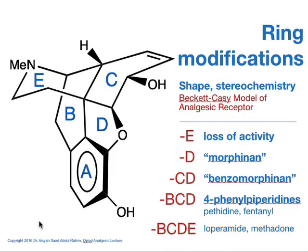The last part of the modification would be on the ring structures. As you know already, there are five rings in morphine: A, B, C, D, and E. For example, if you take out the E ring, it would result in a nucleus that gives a total loss of activity — in other words, that particular interaction is very important. If you take out ring D only, leaving A, B, C, and E, it would give a morphinan structure.